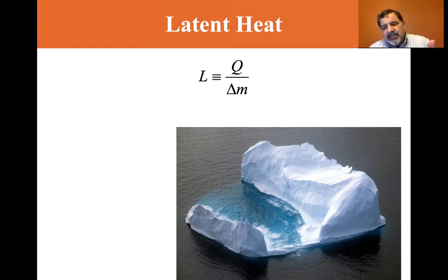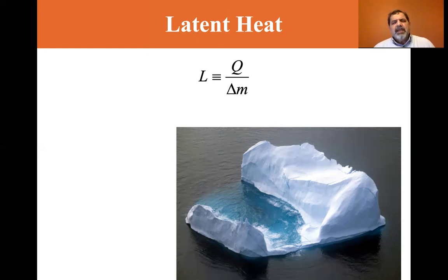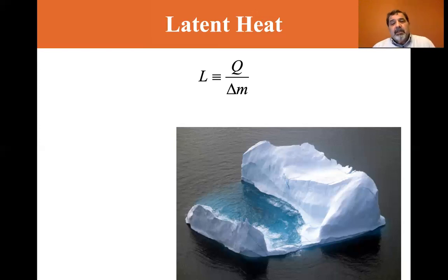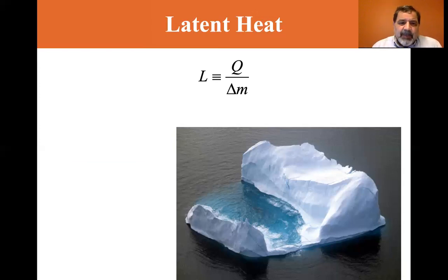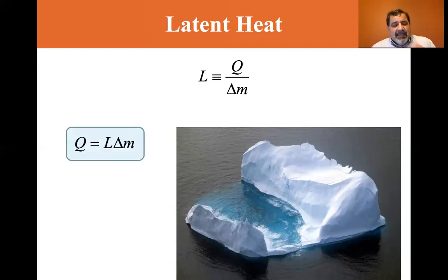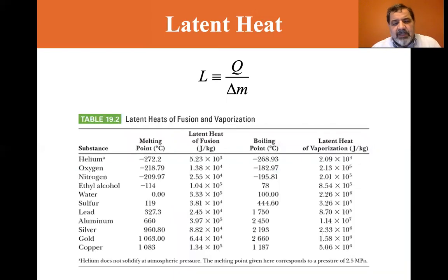The latent heat is the amount of energy to change the mass of a system. For example, if you put a cube of ice on a plate — say it weighs 10 grams — when it melts you get 10 grams of water. The latent heat L equals Q divided by delta-m, the change in mass. So Q equals the latent heat times the change in mass.